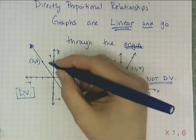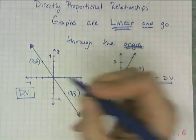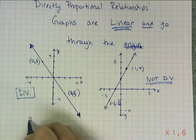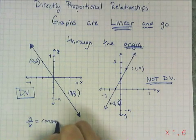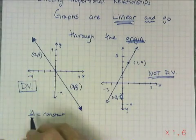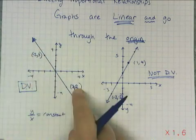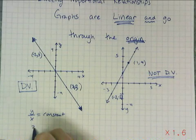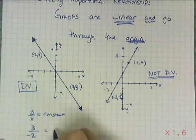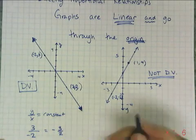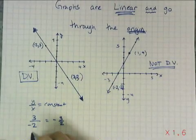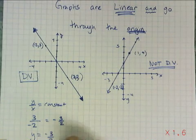For a graph that is a direct variation, I can find the equation since y over x is constant. Taking the data point where y is 3 and x is negative 2, the constant of variation is negative 3/2. Confirming with the point (-3, 2): it also gives negative 3/2. So the equation is y equals negative 3/2 times x.